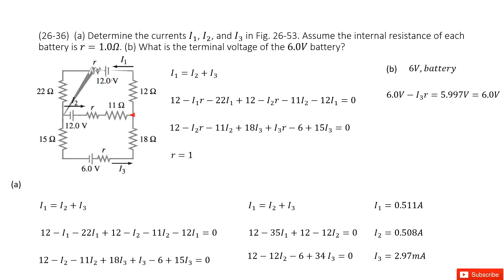And then we can draw the first loop this way. And we can see the 12 volt battery makes the voltage increase. And then the current goes through resistor R, so the voltage decreases by I1 times R. Then the voltage decreases by I1 times 12. And then it goes through the battery 12 volts, so the voltage increases 12 volts.